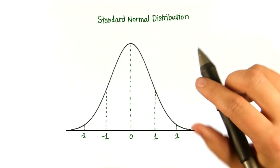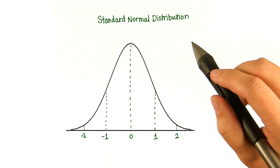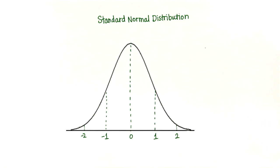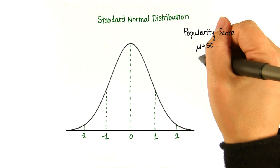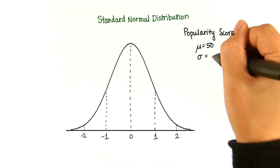So for example, let's say we wanted to give everyone a popularity score from 0 to 100, with 50 being the mean. And let's say we want the standard deviation to be 10.